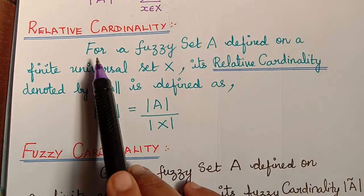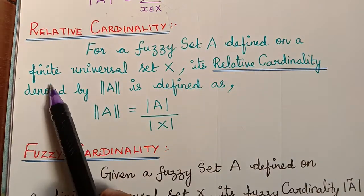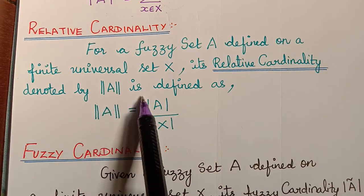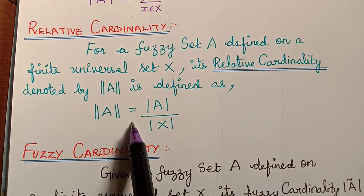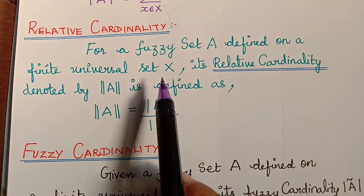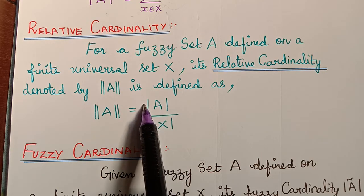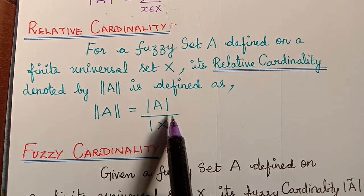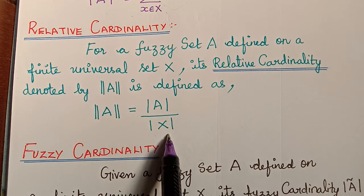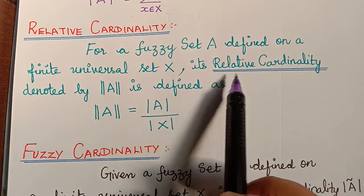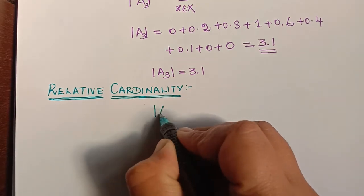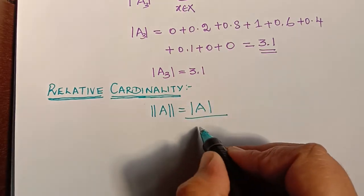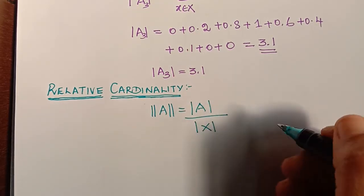The next definition is relative cardinality. For a fuzzy set A defined on a finite universal set X, its relative cardinality, denoted by norm A, is defined as norm A equal to modulus of A divided by modulus of X. So the scalar cardinality divided by the cardinality of the universal set gives us the relative cardinality.